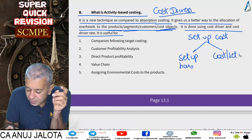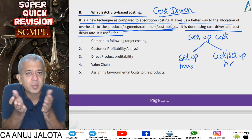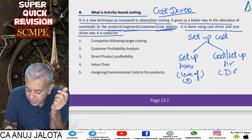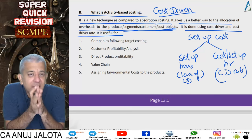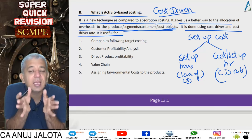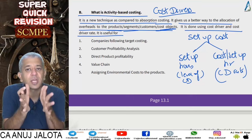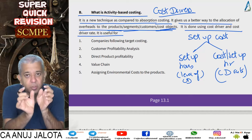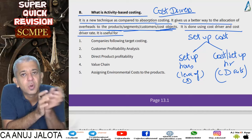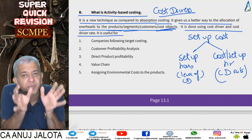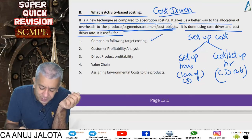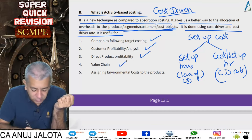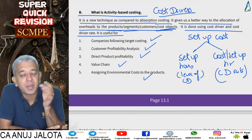ABC is done using a cost driver and a cost driver rate. For example, setup cost depends on setup hours — the level of cost driver — and the cost per setup hour is the cost driver rate. ABC is used in target costing, customer profitability analysis, direct product profitability, value chain analysis, and assigning environmental costs. These are also our next five topics in the chapter.